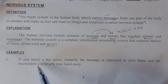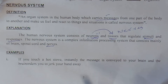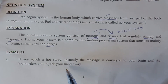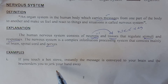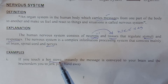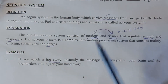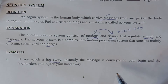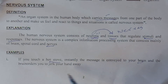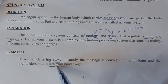Example: If you touch a hot stove, instantly the message is conveyed to your brain and the brain orders you to jerk your hand away. The hotness is basically the stimuli. This stimuli is carried by the neuron to the brain. The brain analyzes and feels the sensation, and then the jerk — the pulling away of the hand — is the response.